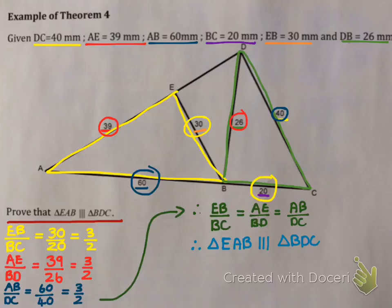So triangle EAB is similar to BDC because my sides of my triangle are in proportion. I can also tell which angle is equal to which angle now simply because theorem 4 said they must be equiangular. But I don't have to worry here. It simply said prove they're similar. So they are.